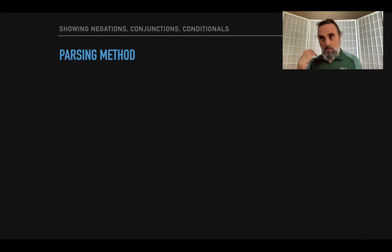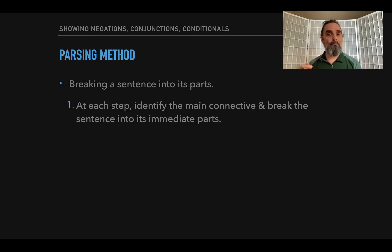So this is a parse. So you're going to have homework that does this, where you parse a sentence. And how do you do that? What we're doing when we're parsing it is we're building the parsing tree, and that means we're breaking a sentence into its parts. So at each step, you find the main connective, and you get rid of it, and you break the sentence into its immediate parts, which is what we did.